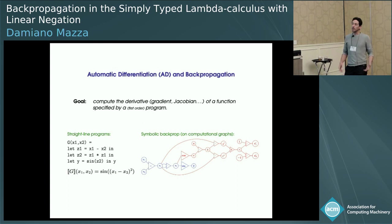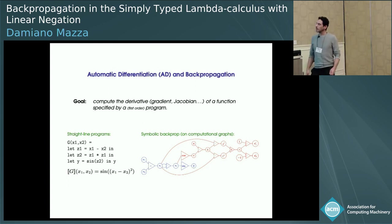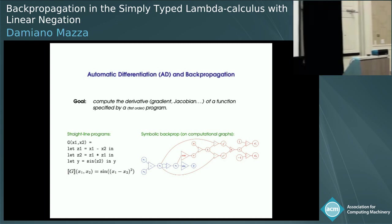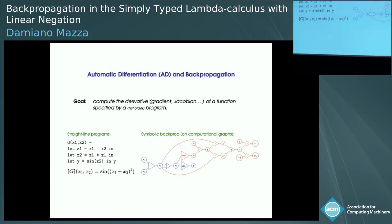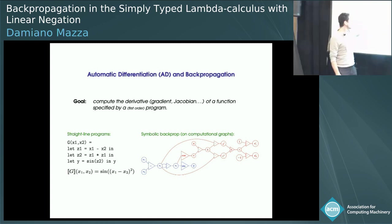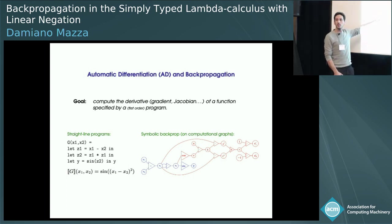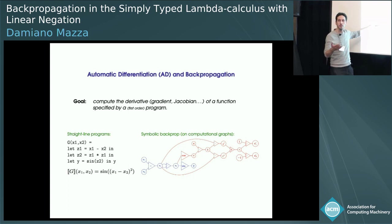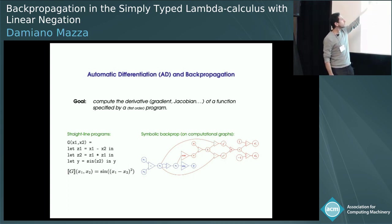Automatic differentiation is an old field — it exists since at least the 70s. Traditionally, what people do is consider things we can call straight-line programs: basically sequences of variable assignments with first-order functions. This is something much less complicated than the language Gordon introduced before, and it has a very natural, trivial semantics. It gives you a function from a power of the real numbers to some other power of the real numbers.